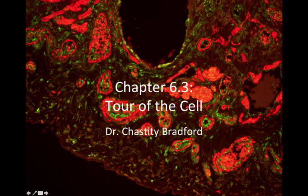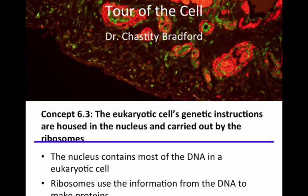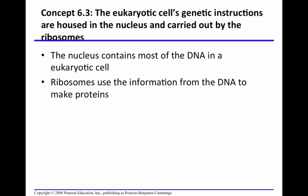Hello, Biology 230. This is Dr. Chastity Bradford at Tuskegee University, and I am continuing to be your tour guide as we continue to tour the cell throughout Chapter 6. This is Concept 6.3. This concept addresses the fact that the eukaryotic cell's genetic instructions are housed in the nucleus and carried out by the ribosomes.